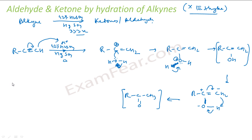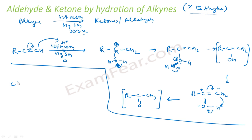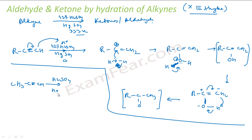For example, if I take CH₃C≡CH and treat it with 40% H₂SO₄ and HgSO₄, what you get is CH₃–CO–CH₃. This is propanone. So by hydration of alkynes, we can easily get ketones or aldehydes.